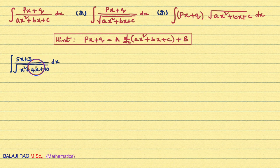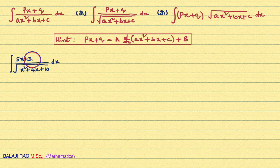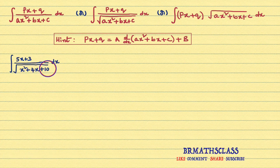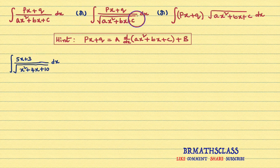First, you identify that this integral is of which form. You observe that the numerator is in the form of PX plus Q, divided by square root of an expression in the form of AX square plus BX plus C. You can easily identify that this integral is of this form. If the given integral is any one of these three forms, the procedure is same.